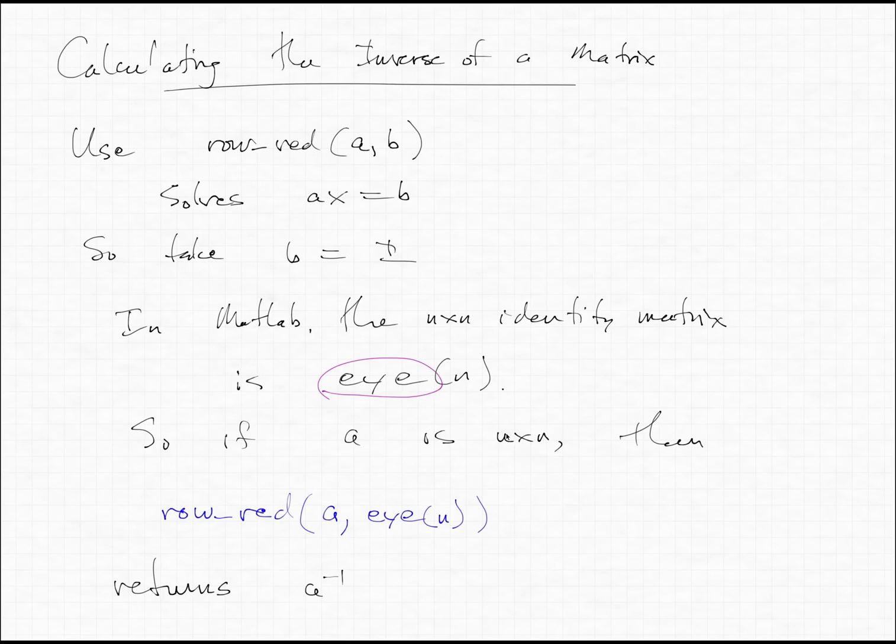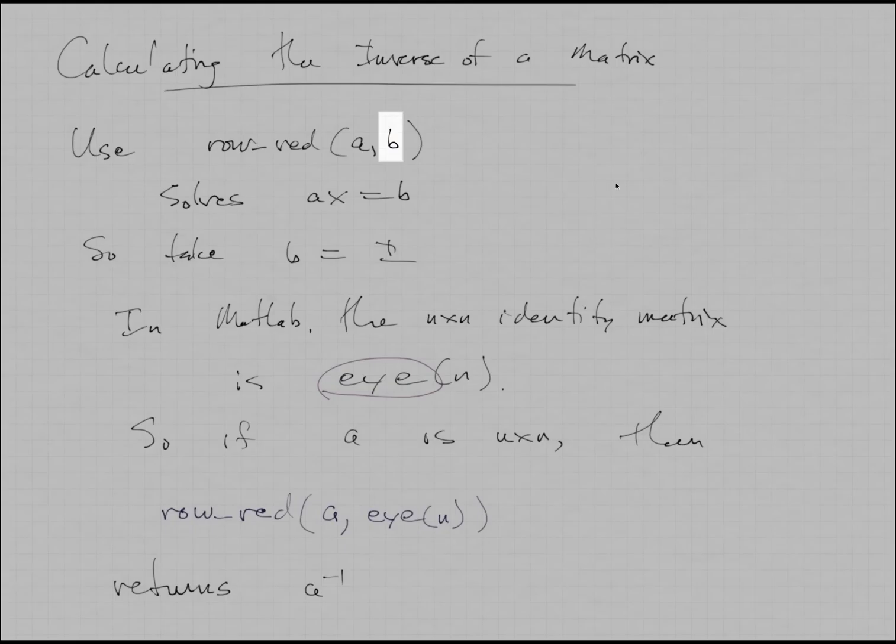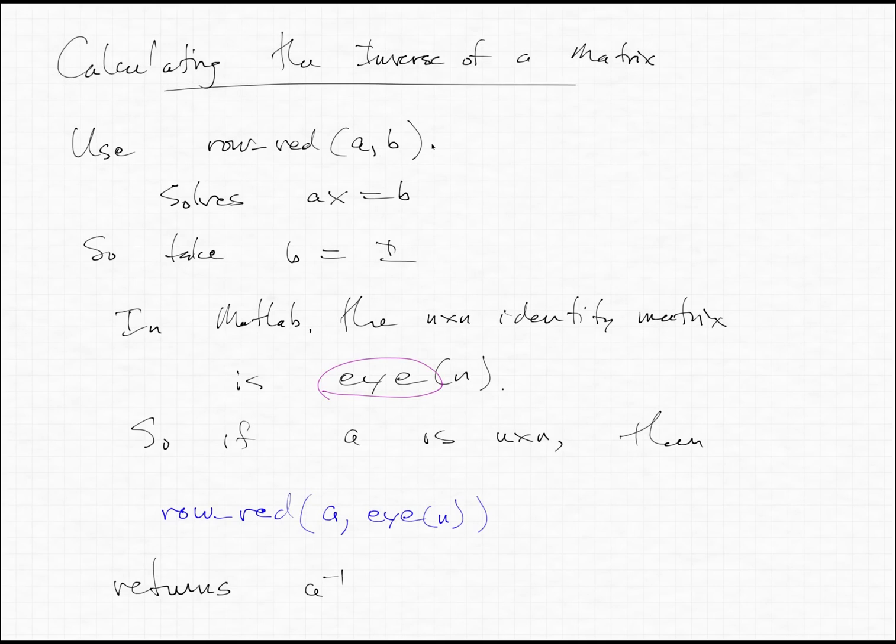Hello again everybody. I'm just going to have a quick note about computing the inverse of the matrix. Because I, for a change, had some foresight and decided to build into my row red function the capability for handling matrices B that are larger than column vectors. That actually will allow us to also calculate the inverse of a matrix using the same function.